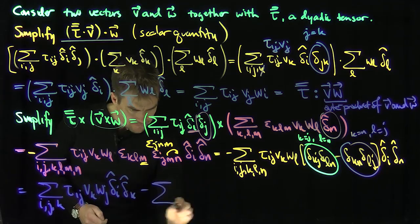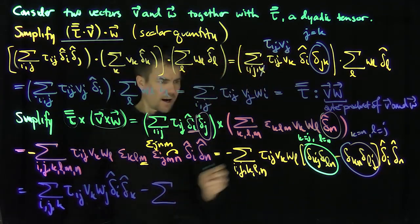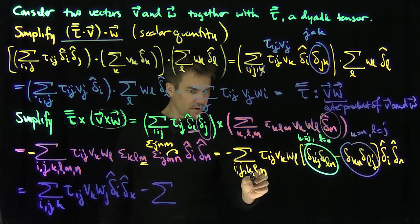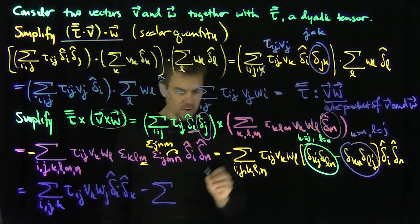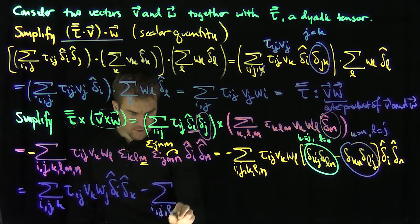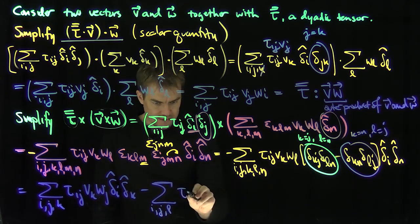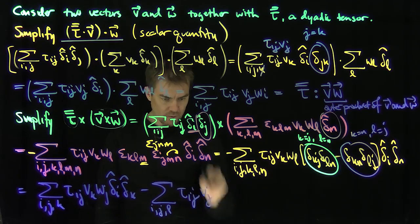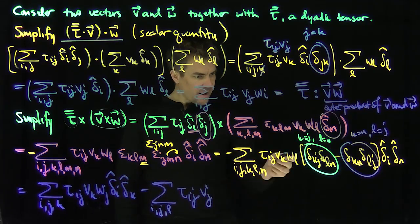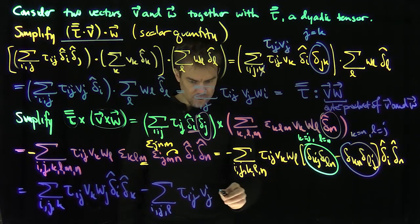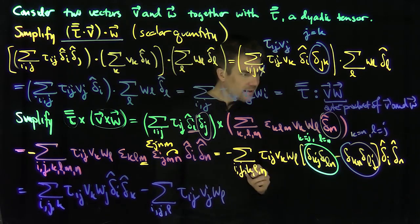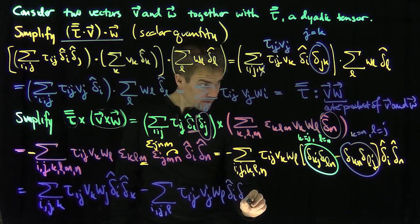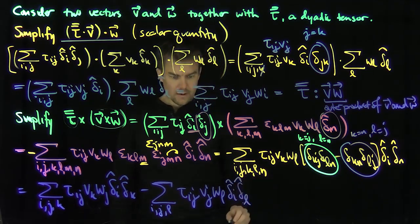For the mismatch term, delta_kn sets k equal to n, and delta_lj sets l equal to j. So the negative sum reduces to the sum over i, j, l of tau_ij V_j W_l times delta-i-hat delta-l-hat.